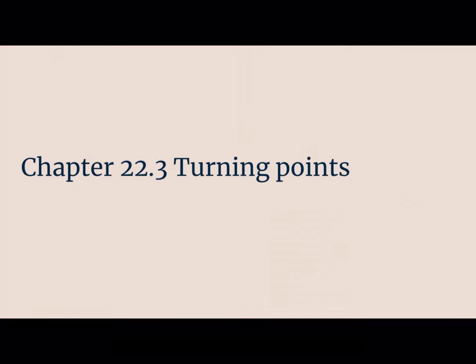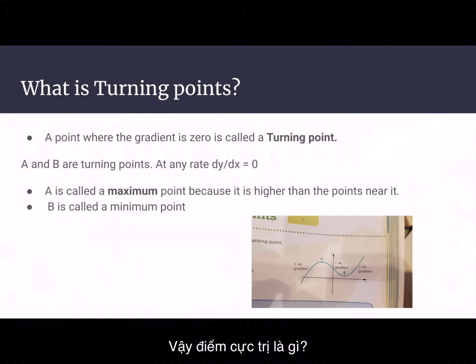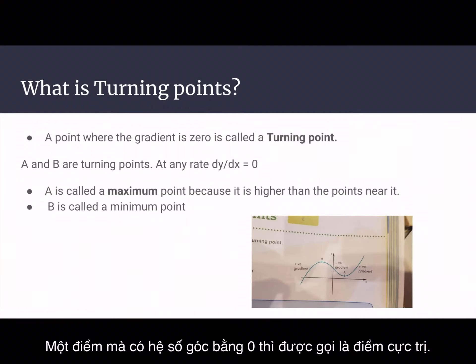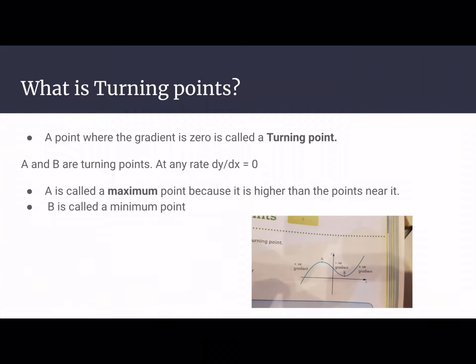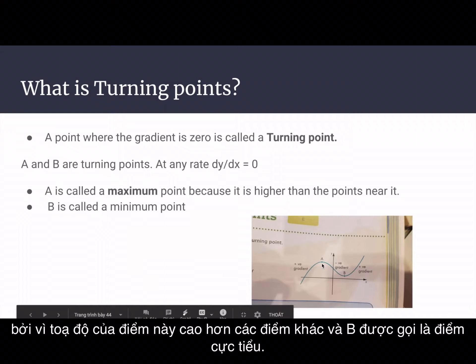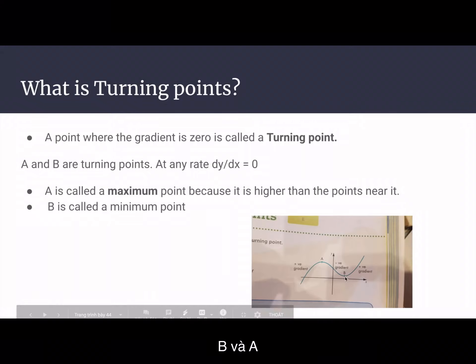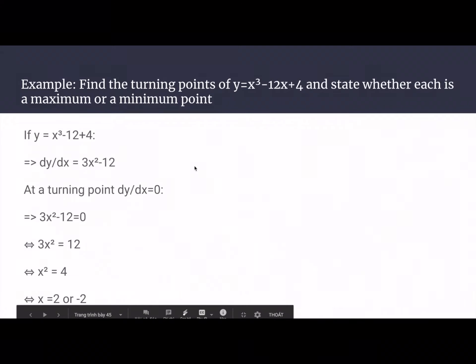This is chapter 22.3: Turning Points. A turning point is a point where the gradient is zero. At any turning point, dy/dx equals zero. A is called a maximum point because it is higher than the surrounding points, and B is called a minimum point because it is lower than the surrounding points.